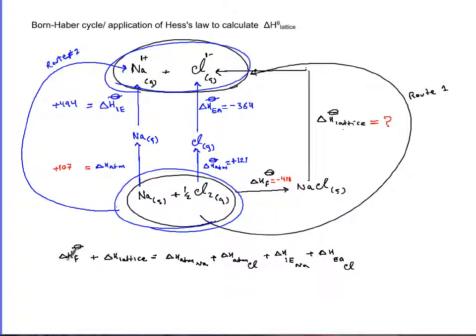I'm going to subtract delta H F from both sides, so minus delta H formation of sodium chloride minus delta H formation. These two terms go away, so let's just plug in our values. So delta H lattice...